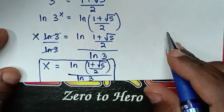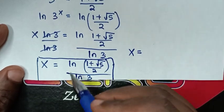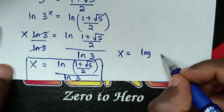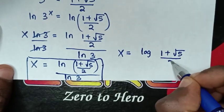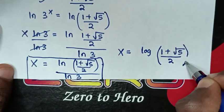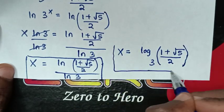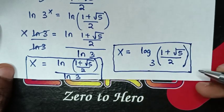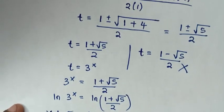Or in another method, in terms of logarithm, the value of x equals log base 3 of (1 plus square root of 5) over 2. So this is also the correct answer. Thank you for watching, see you in the next video, bye bye.